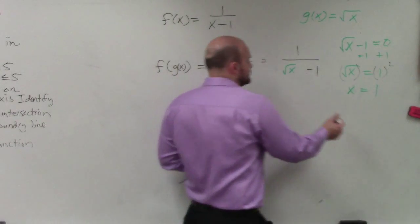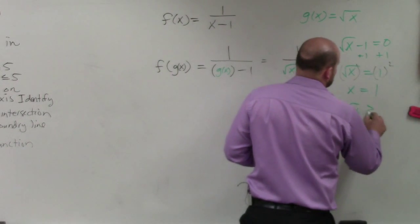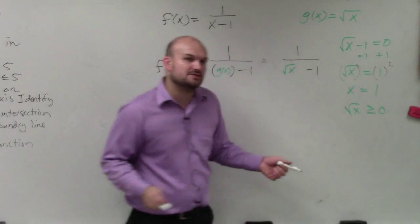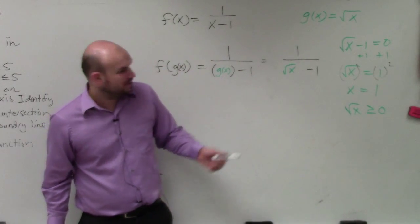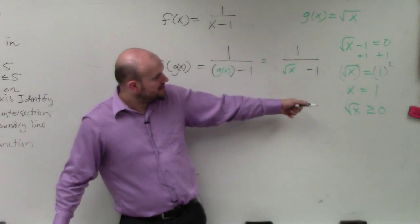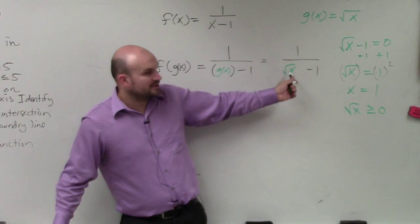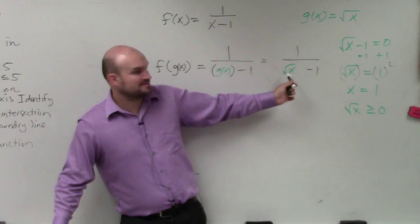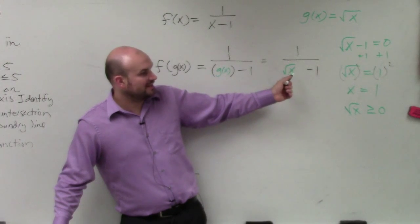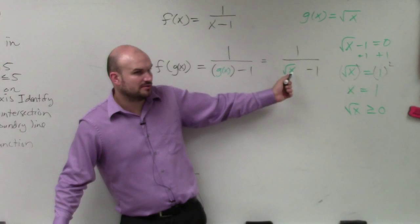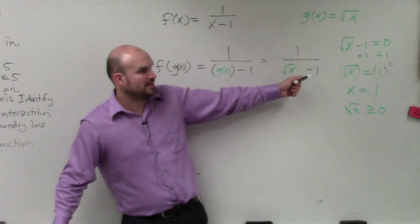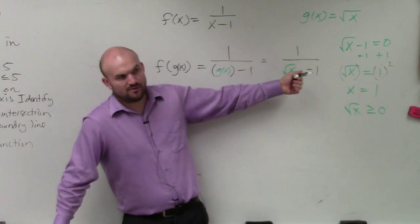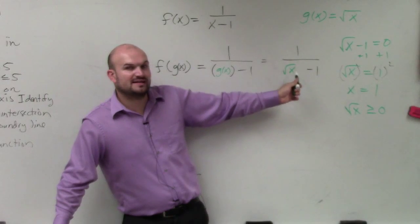Because 1 makes it equal to 0. But there are other numbers that could be an issue here. Remember, anything that's under the square root has to be greater than or equal to 0. You can't take the square root of a negative number. So I can plug in 0. That works. Square root of 0 is 0. 0 minus 1 is negative 1. So that works.